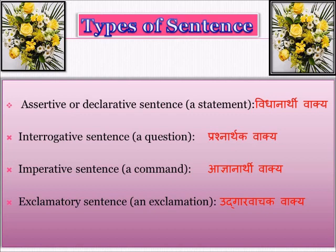The second type is the interrogative sentence — in an interrogative sentence we ask a question. The third type is the imperative sentence — in an imperative sentence a command, an advice, a suggestion, etc. is given. The fourth type is the exclamatory sentence — in such types of sentences a strong exclamation is expressed.